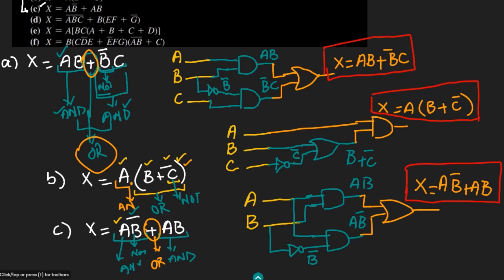That is it for today — we have seen three parts: part A, part B, and part C, and we have seen the combinational logic circuits for them. I hope you have understood all the steps carried out here, and I will see you with more interesting questions in our upcoming video. Till then, take care of yourself and I will see you soon.